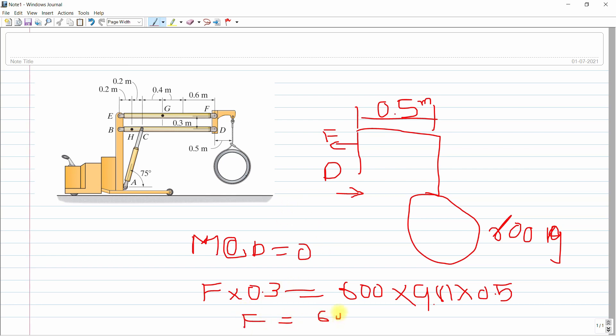And we will find out F is equal to 600 multiplied by 9.81 multiplied by 0.5 and divide by 0.3. So we get F at this location and now we will find out what about G.